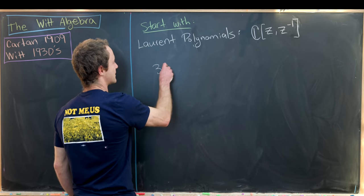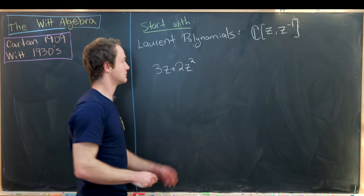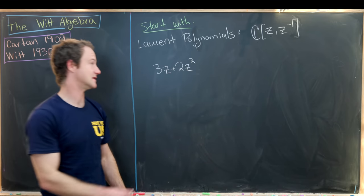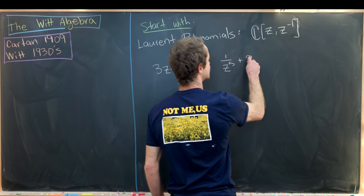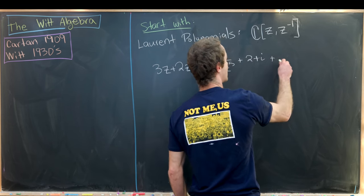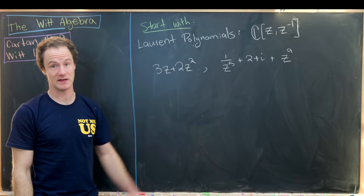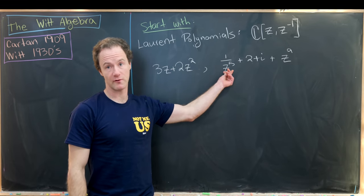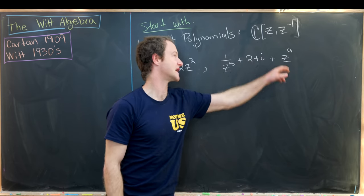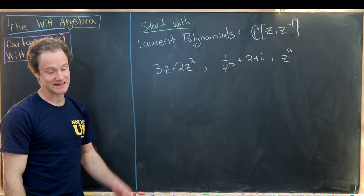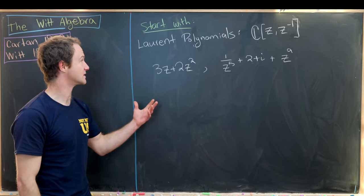Let's look at some examples of elements in C adjoined z, z inverse — the ring of Laurent polynomials. One example would be 3z plus 2z squared. Another would be 1 over z to the 5th plus 2 plus i plus z to the 9th. Notice we've got a 1 over z to the 5th term, a constant complex term, and a z to the 9th term.